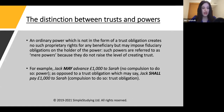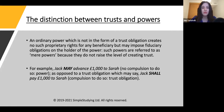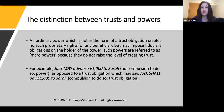The distinction between trust and power is important. An ordinary power — not in the form of a trust obligation — creates no proprietary rights for any beneficiary, but may impose fiduciary obligations on the holder of the power. Such powers are referred to as mere powers, because they do not rise to the level of creating trusts. For example, 'Jack may advance £1,000 to Sarah' is a mere power, whereas 'Jack shall pay £1,000 to Sarah' imposes a legal trust obligation — the word 'shall' versus 'may' makes the distinction.